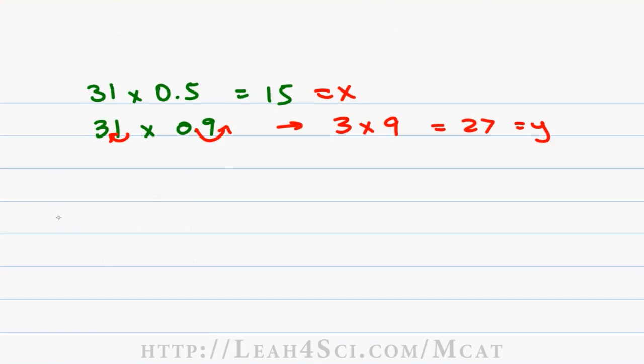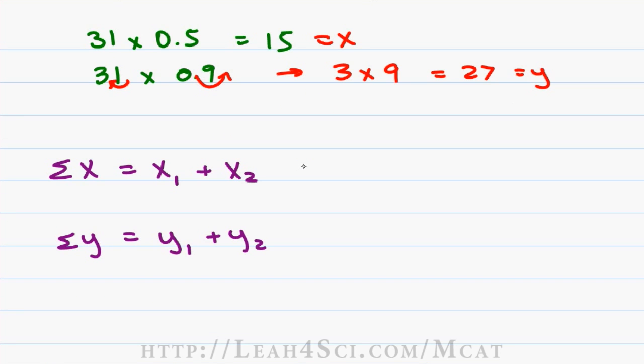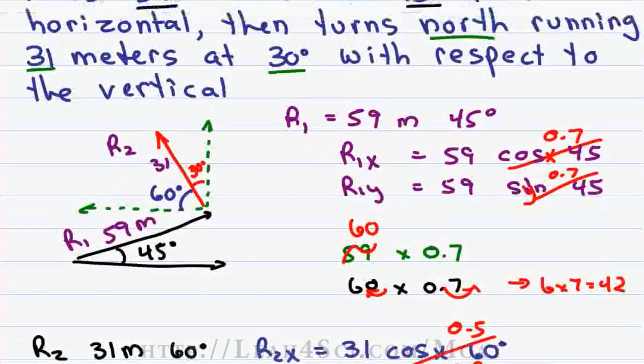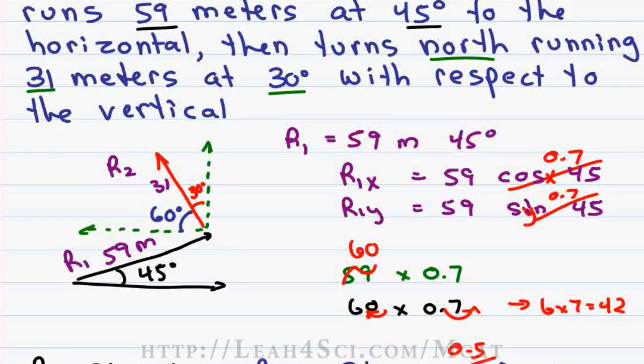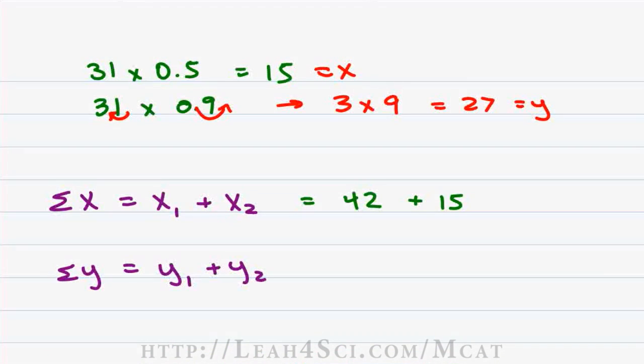Now that we have our vector components we want to add them up. So we'll have the sum of x equals x1 plus x2, the sum of y equals y1 plus y2. X1 is 42 and x2 is 15 but be careful about the direction. Notice that R1 goes to the right which is the positive x direction, R2 goes to the left which is the negative x direction and so it's really plus negative 15 or simply minus 15. 42 minus 15, you can try 40 minus 15 which is 25 then add back the 2 giving you 27.